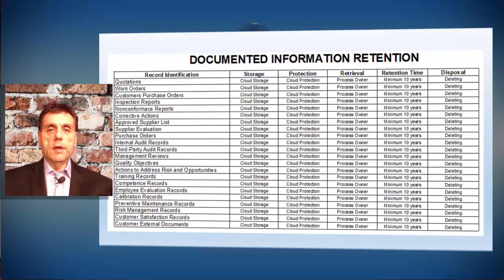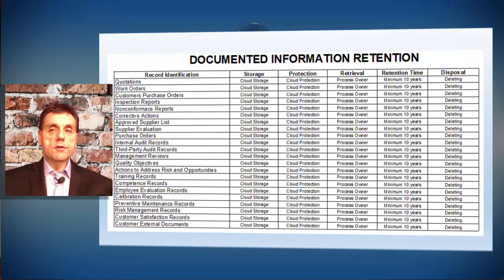Protection could be cloud protection, but it could also be a backup of our system. Retrieval could be by the process owner, so the process owner is responsible for the retrieval of these records. We also have to specify the retention time — it could be 10 years, could be one year, depending on how we specify it.